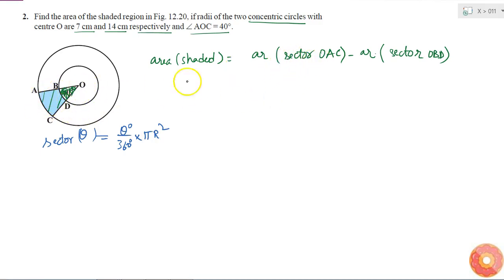For the sector OAC, what will this be? Theta is 40 degrees, because this angle is 40 degrees. So this is 40 by 360 into pi into—what is the radius for this bigger circle? It is 14 centimeters—into 14 square, minus area of the sector OBD will be again 40 by 360 into pi into—for this sector OBD the radius is 7 centimeters—so here I will apply 7 square.